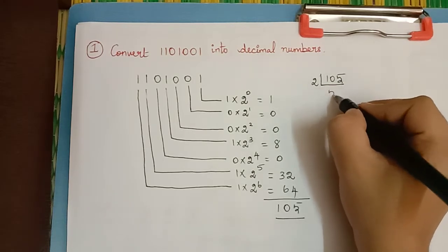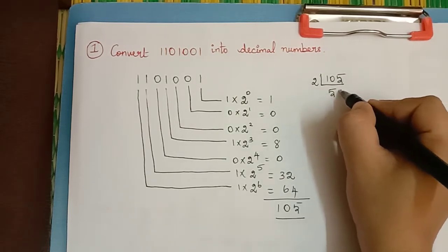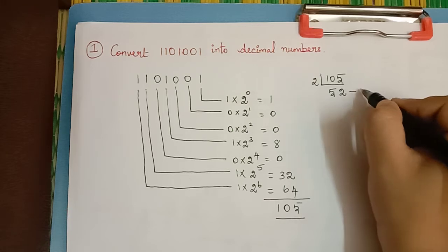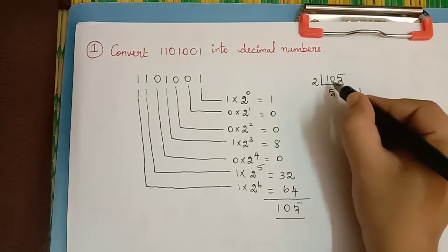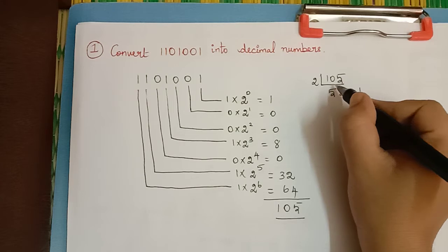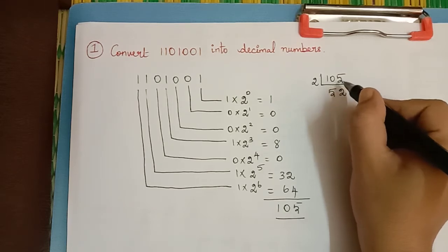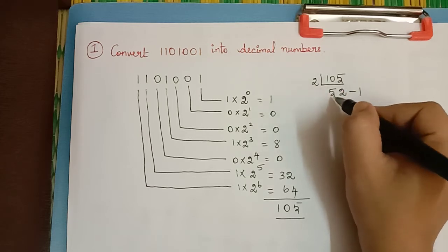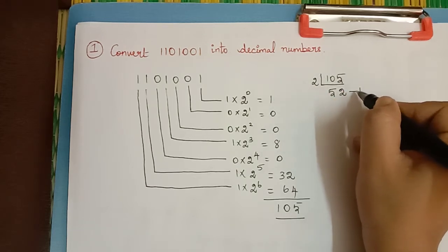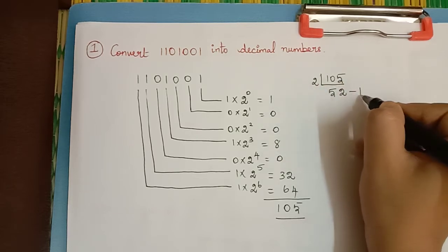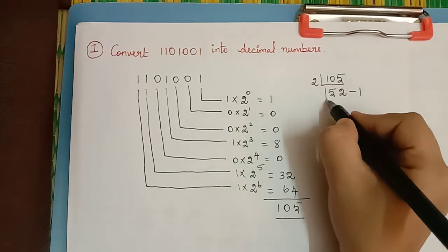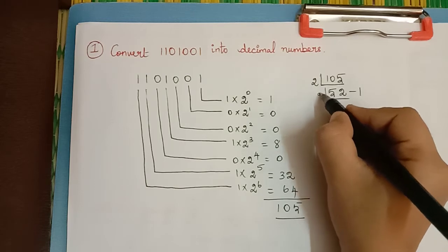105 divided by 2 gives 52 with a remainder of 1, because 105 is not exactly divisible by 2. The closest number lesser than 105 that is divisible by 2 is 104, which is 52 times 2. So the remainder when dividing 105 by 2 is 1. Now we divide 52 by 2, which gives 26 with remainder 0.